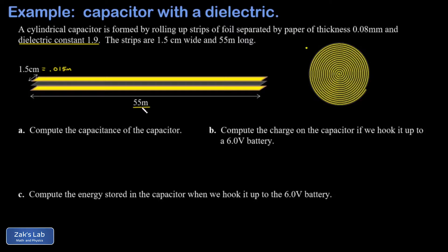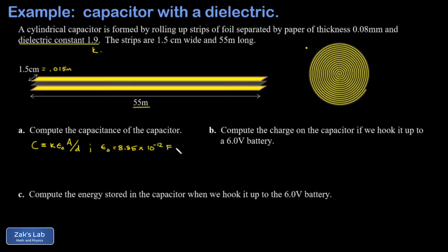In part A, we want to get the capacitance of this capacitor. When a dielectric constant is present, capacitance is given by kappa — the dielectric constant — times epsilon zero, the permittivity of free space, times the area of each plate divided by the distance between the plates. We already know that kappa is 1.9. The permittivity of free space is 8.85 times 10 to the negative 12 farads per meter.